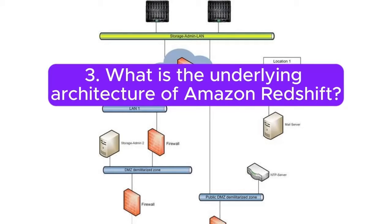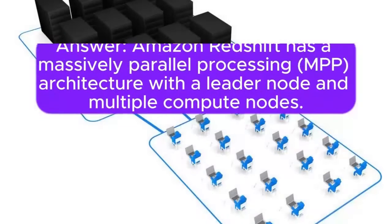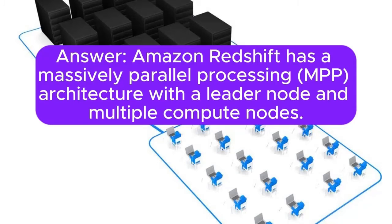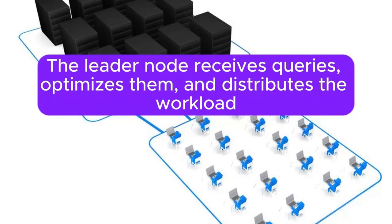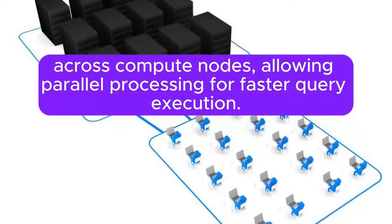Question 3: What is the underlying architecture of Amazon Redshift? Answer: Amazon Redshift has a massively parallel processing (MPP) architecture with a leader node and multiple compute nodes. The leader node receives queries, optimizes them, and distributes the workload across compute nodes, allowing parallel processing for faster query execution.